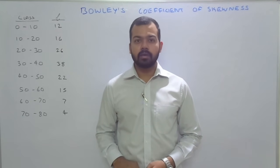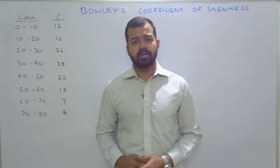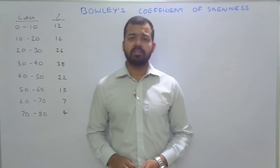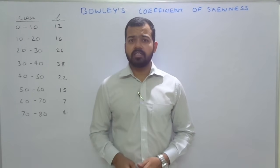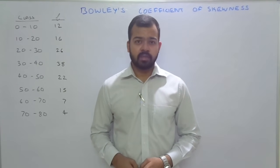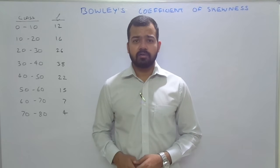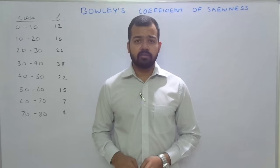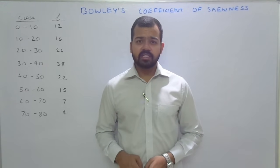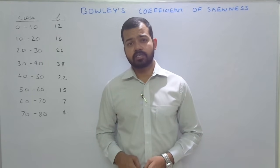In the previous video we learned about how to calculate quartiles and we were discussing about quartile deviations, so we are aware about how to calculate Q1 and Q3. Bowler's coefficient of skewness is based on the value of quartiles. If the series or the items are symmetrical, the value of Q3 and Q1 are equidistant when compared to the value of median. If the series is asymmetrical, it is considered a skewed series.